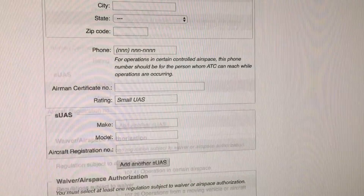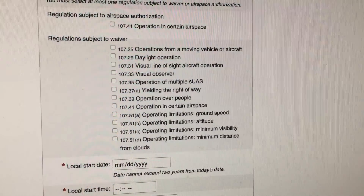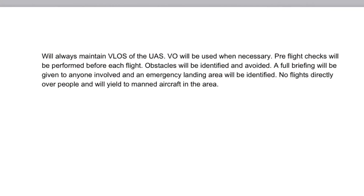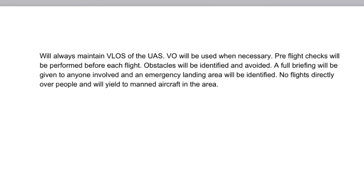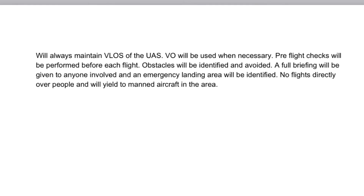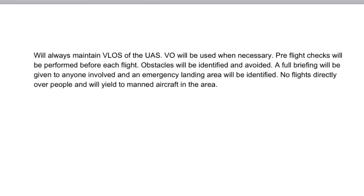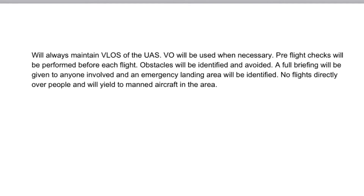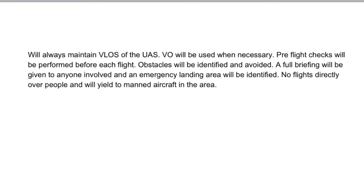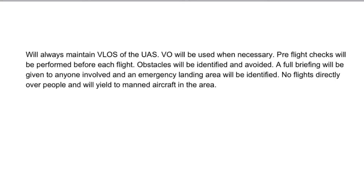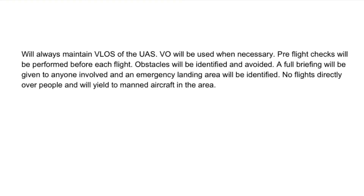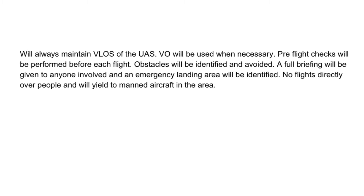They ask for a description of the proposed area you're going to be flying. For example, if you were inspecting a cell phone tower, you can put that in the description. They also want to know how you're going to keep the flight safe — that's their main concern. I like to include my standard operating procedure: I will always maintain visual line of sight, I will have a visual observer if necessary, I'll do pre-flight checks and a briefing, identify obstacles before the flight, and — of main concern to the FAA — do not fly over people and yield to manned aircraft in the area.